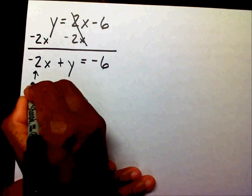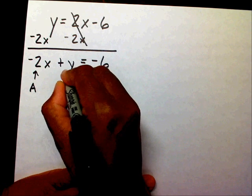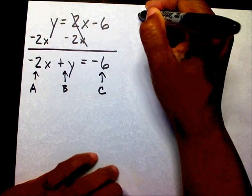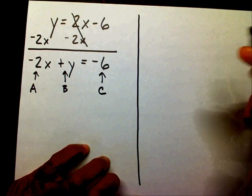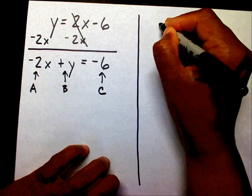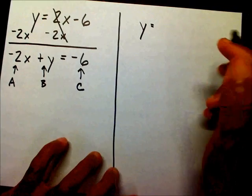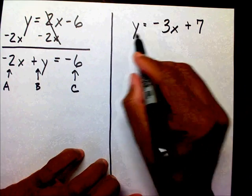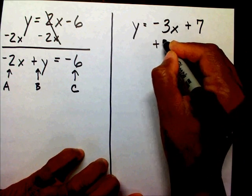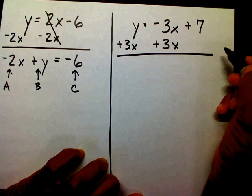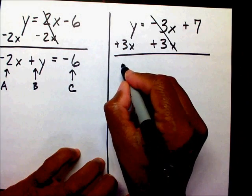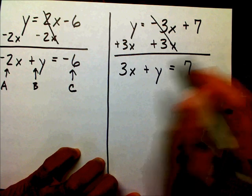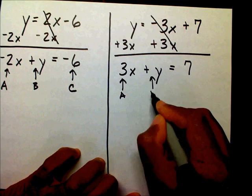And this negative 2 is your a, this 1 is your b, and negative 6 is your c. For another example: y equals negative 3x plus 7. I'm going to add 3x to both sides. The 3x's cancel, leaving me with 3x plus y equals 7. That's your a, that's your b, that's your c.